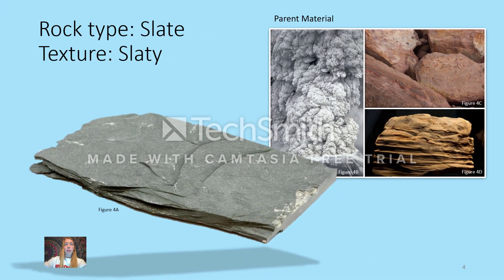The first metamorphic rock we'll look at is slate. Its texture is called slaty, and slate is typically composed of clays, micas, and chlorite. It is very fine-grained and splits easily into flat pieces, often coming off in sheets when broken apart. The parent material is mudrock, claystone, and volcanic ash.